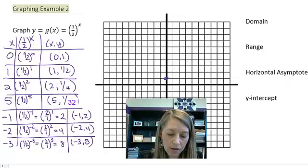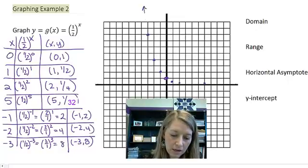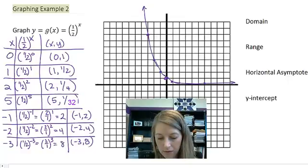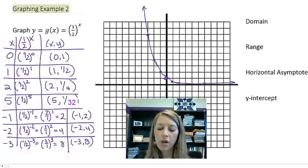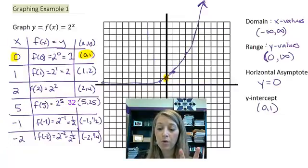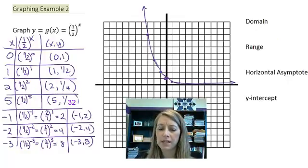Plotting these ordered pairs, I have 0, 1, 1, 1 half, 1, 1 fourth, 5, and then 1 over 32. On the left, negative 1, 2, negative 2, 4, negative 3, 8. And so we can see that here is this exponential function. So it mimics the same graph that we had before except it is basically flipped horizontally. We'll explain why here in the next video. But right now let's continue on with these characteristics.